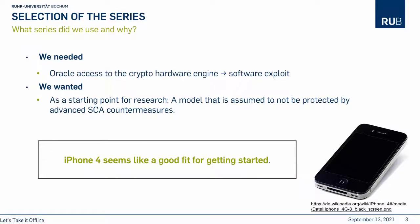As a first step, we needed to figure out what iPhone model we want to consider. For this, we had two main requirements. The first requirement, which is necessary in order to perform a power side channel attack, is Oracle access to the crypto hardware engine. We need to be able to communicate with the engine and trigger an arbitrary amount of encryption with chosen data. To do so, we needed to be able to run arbitrary code on the application processor of the iPhone, which can be achieved through software exploits.